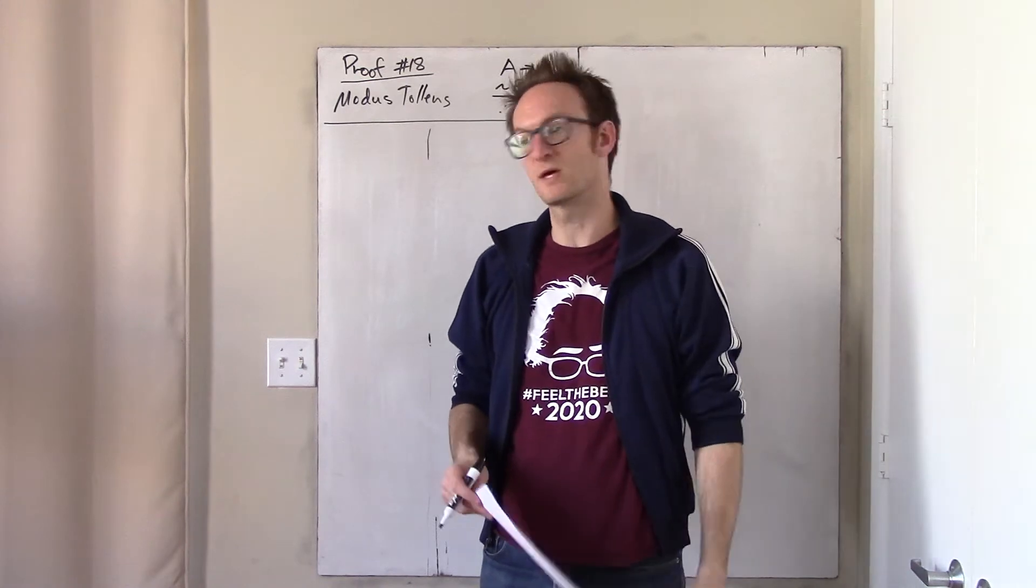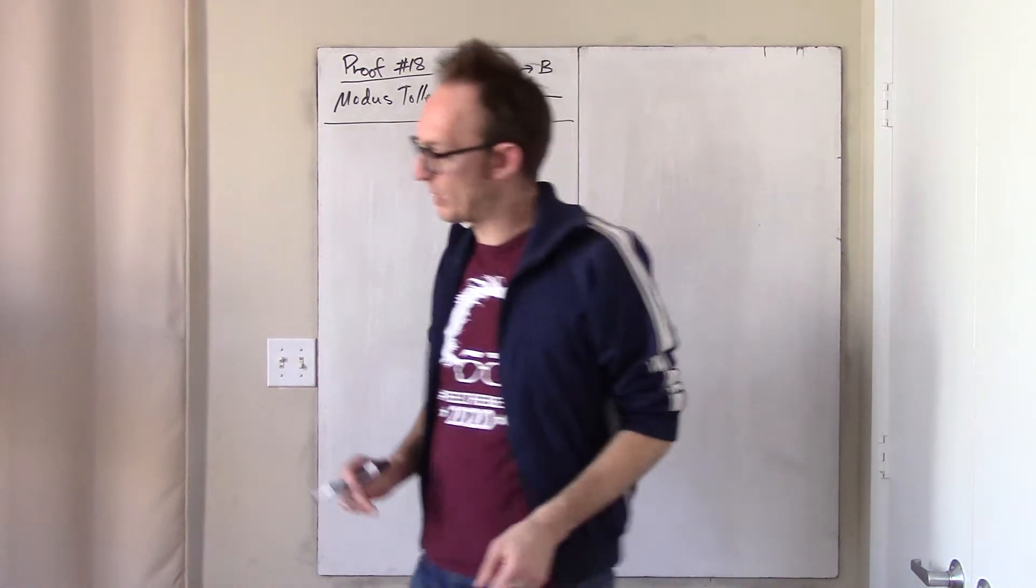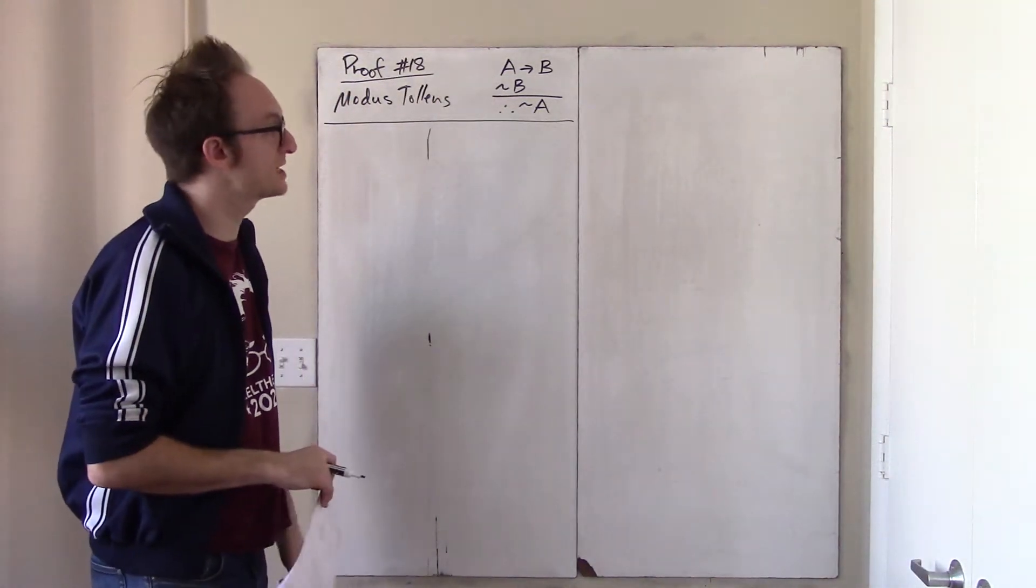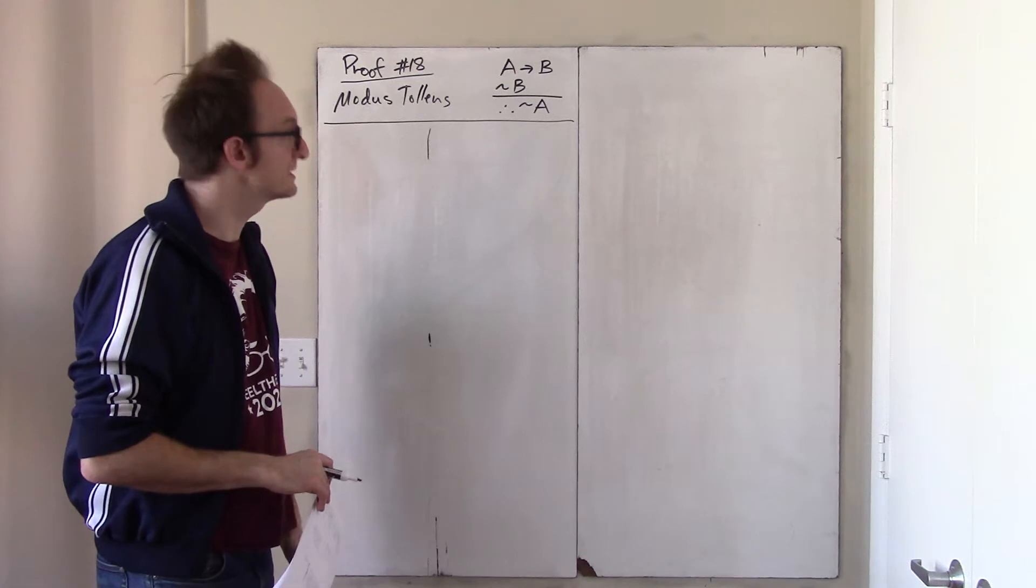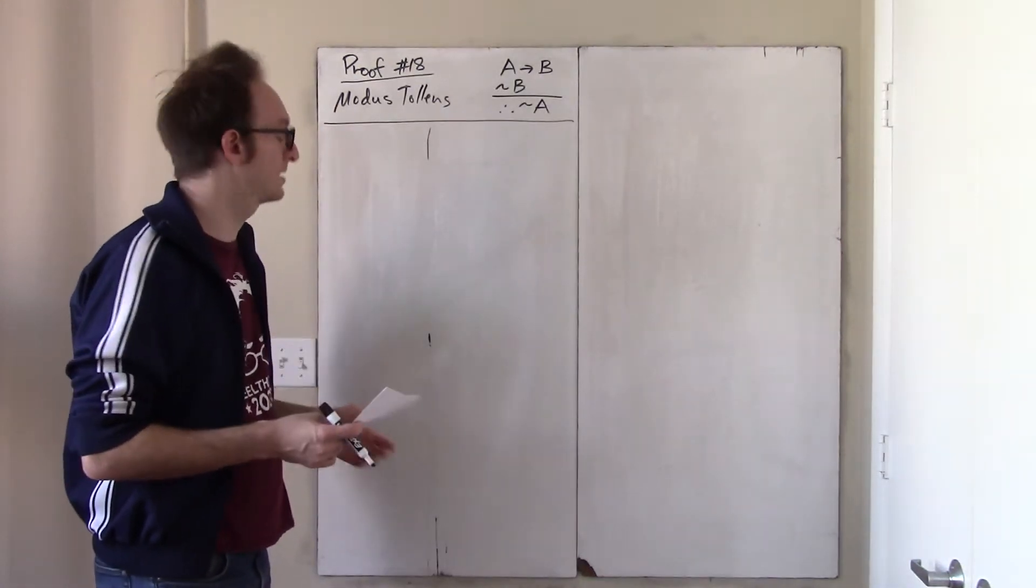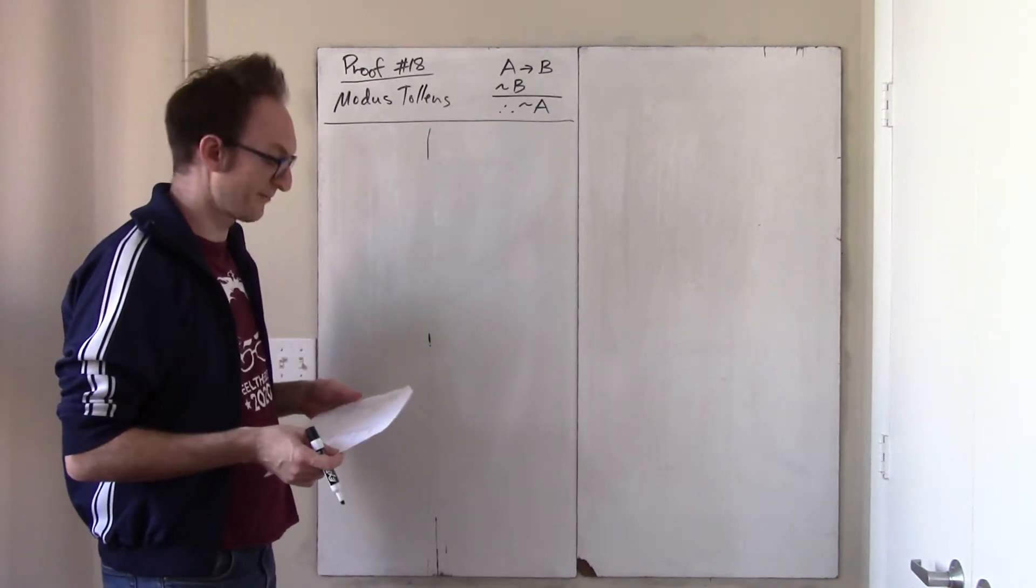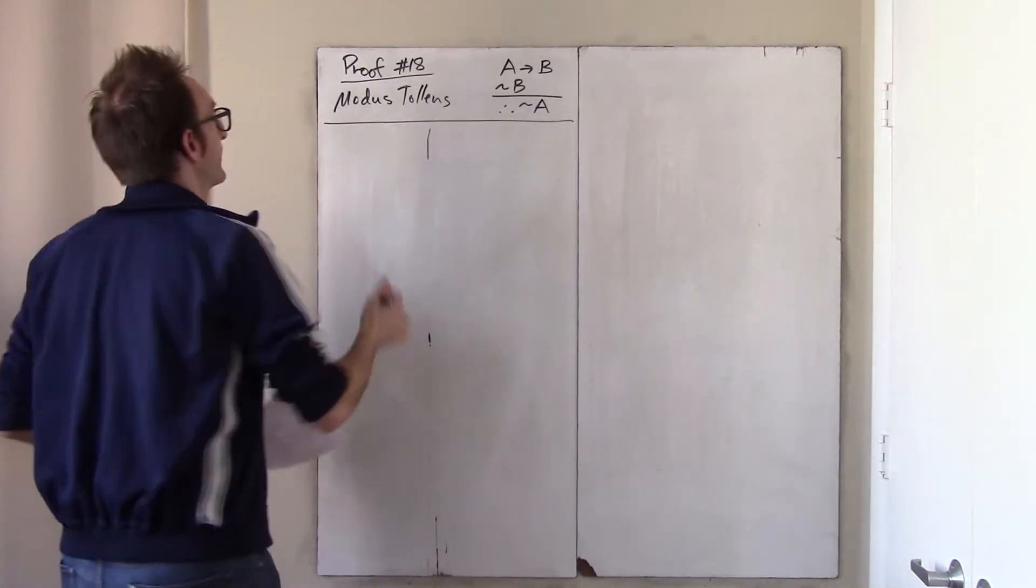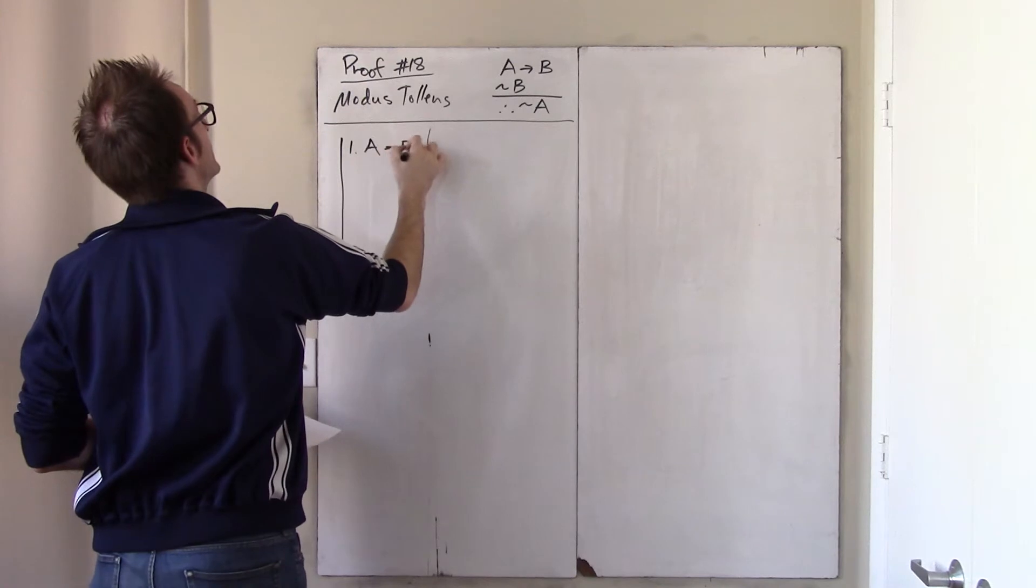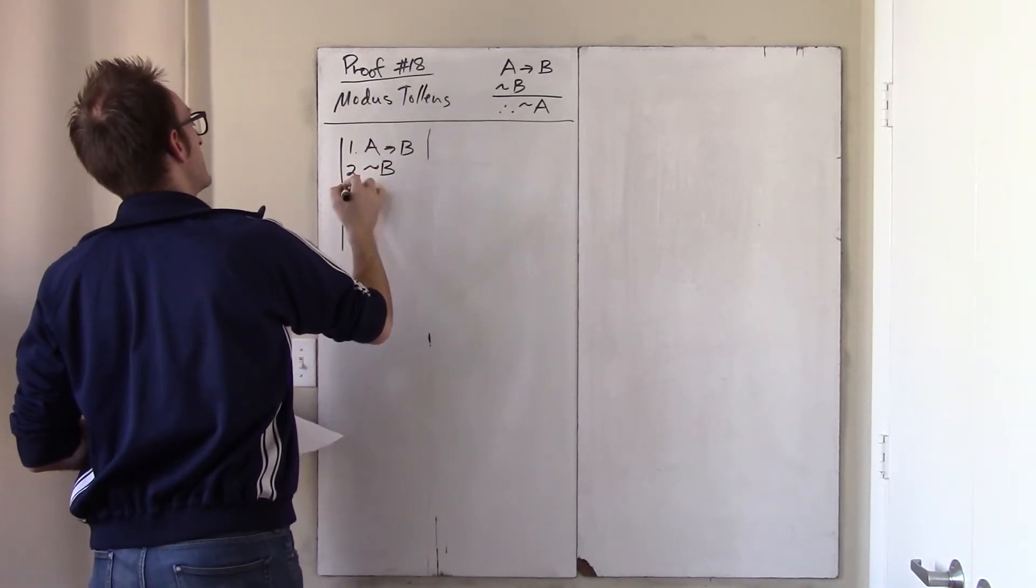Anyway, it's a famous valid argument, but it's beneath us now to memorize these various valid arguments. Once again, you could verify via an exhaustive truth table that this argument is valid, but instead we're going to prove it using the rules of our proof system. Let's just begin, and I'll say what I need to say when I need to say it.